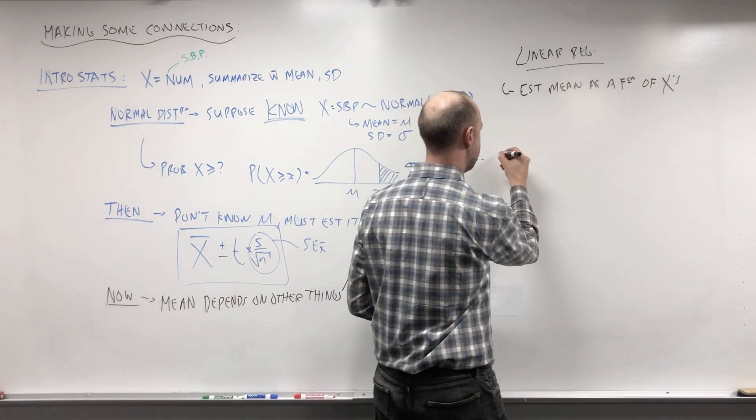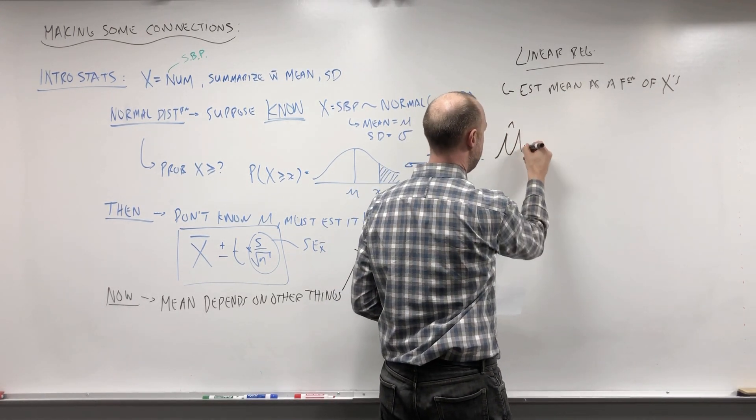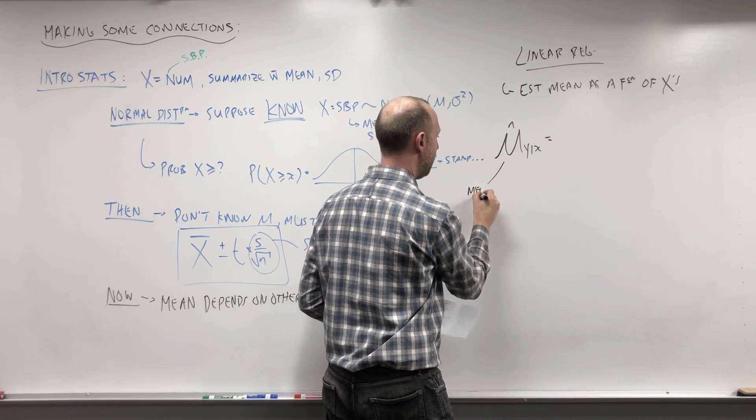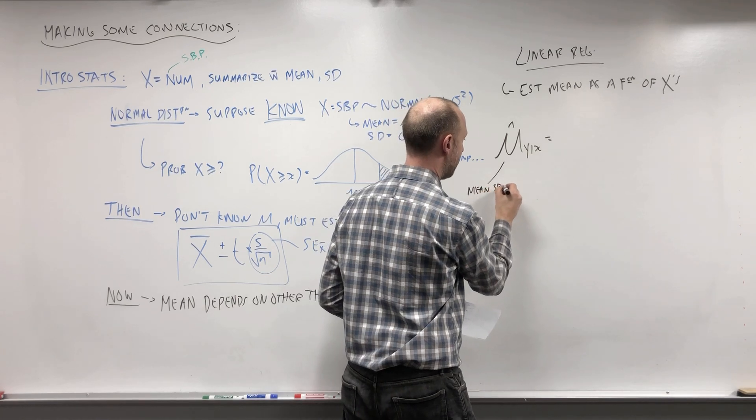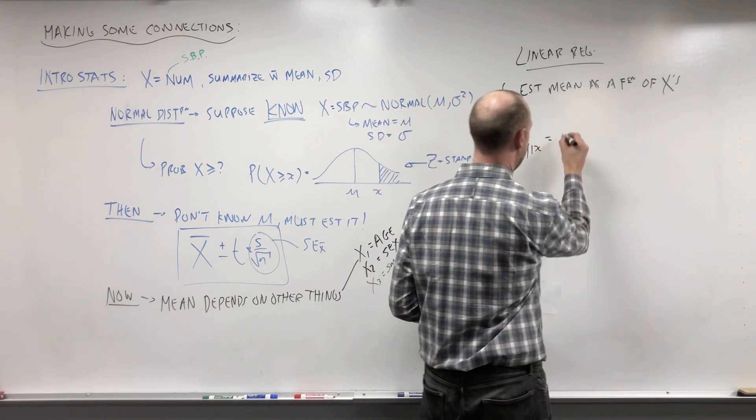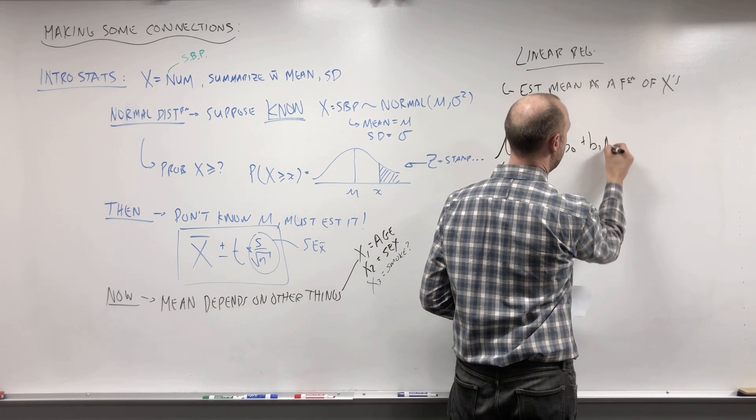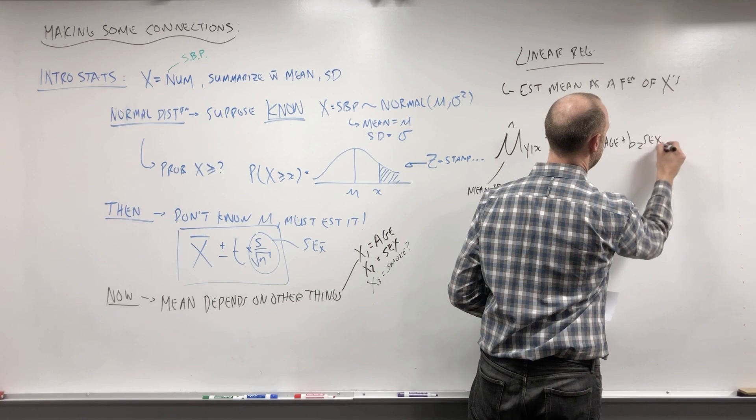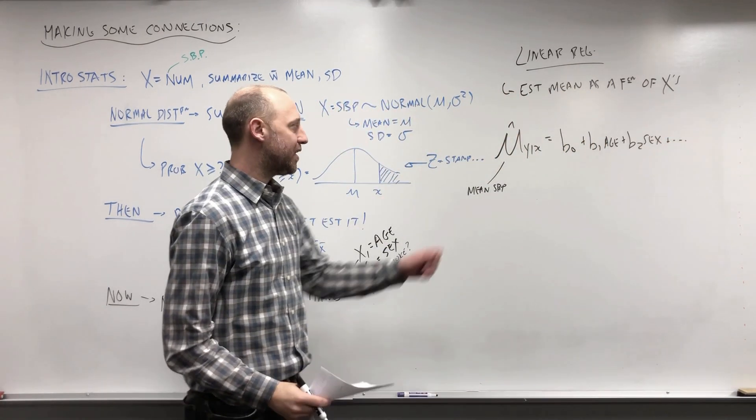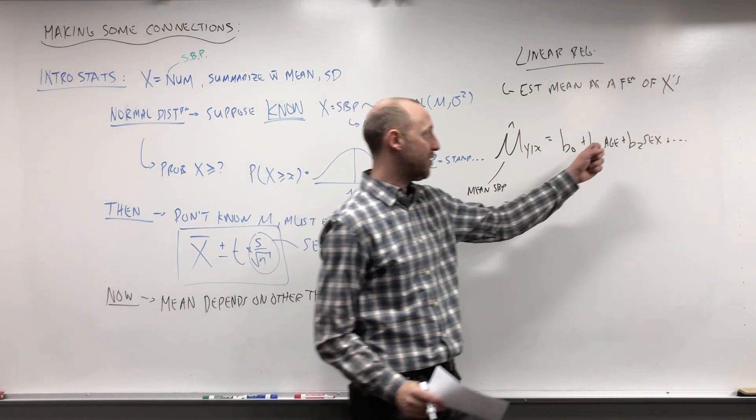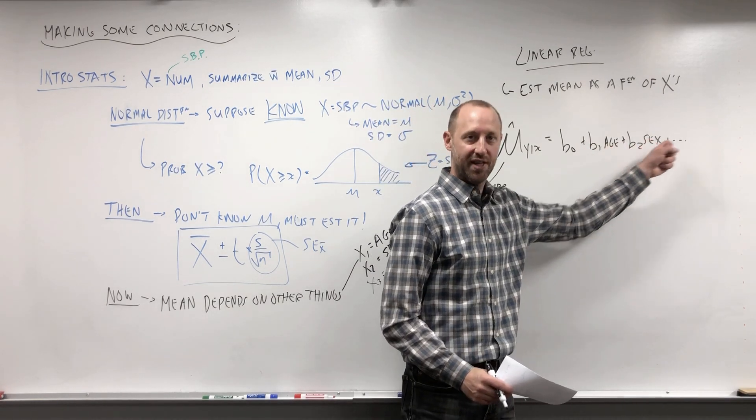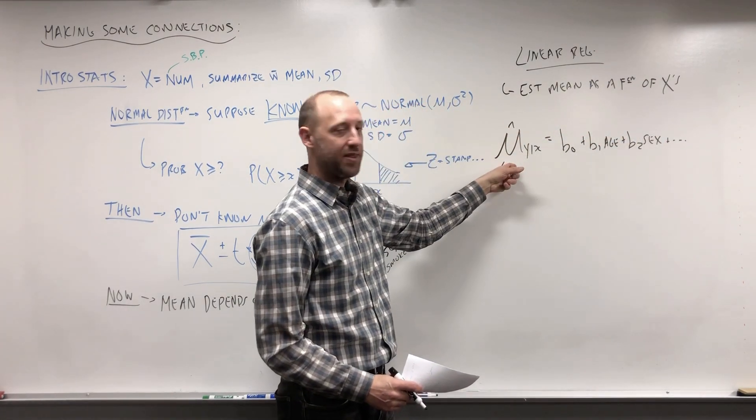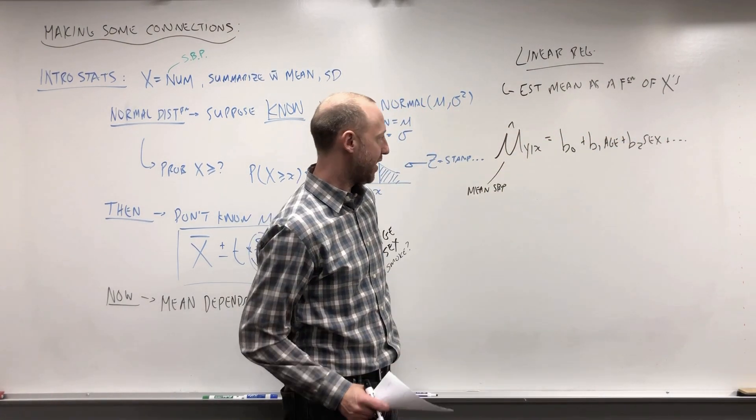So you learn the mean of Y given X. So here in our example, say the mean systolic blood pressure equals b0 plus b1 times age plus b2 times sex and so on. So now we learn to say, well, given the person's age, biological sex, whatever other variables we might think are important, what do we estimate the mean would be for people of those characteristics.